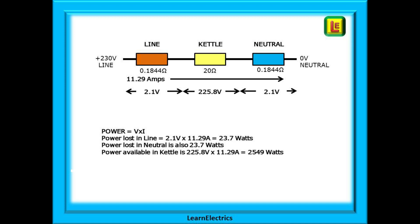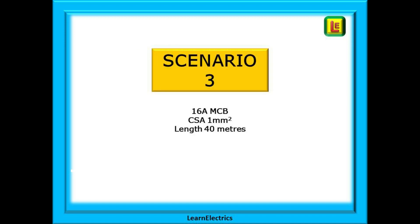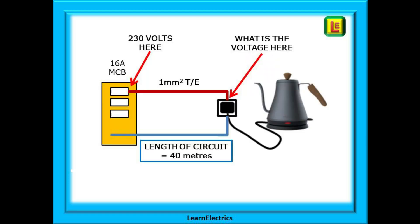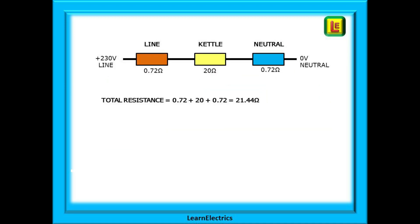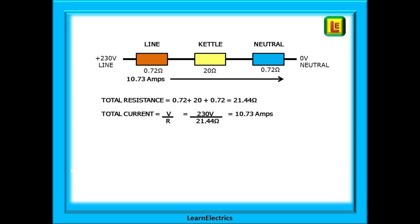Scenario three: a single socket at the end of a 40-meter cable run. An unthinking electrician has used a 16-amp breaker and one-millimeter twin-and-earth cable — using up a half-empty reel from the van. The resistance of the line and neutral is 0.72 ohms each, based on 40 meters of one-millimeter copper. The kettle is still 20 ohms, giving a total resistance of 21.44 ohms. Current is 230 volts divided by 21.44 ohms = 10.73 amps. The thinner cable has had a noticeable effect on current.